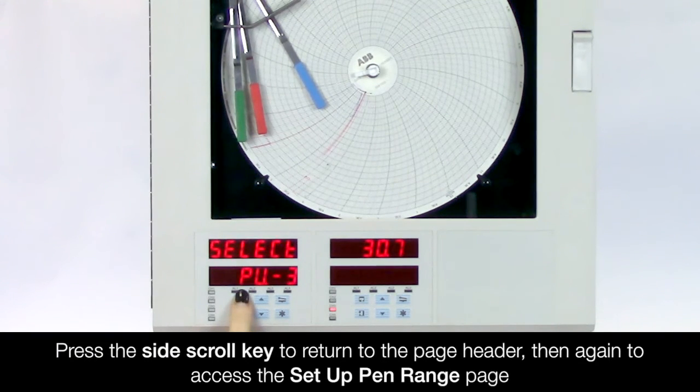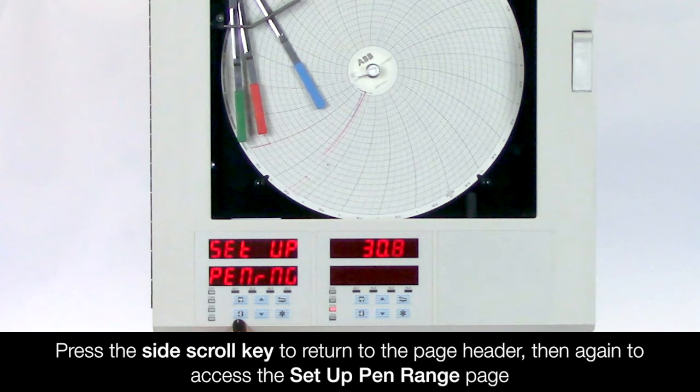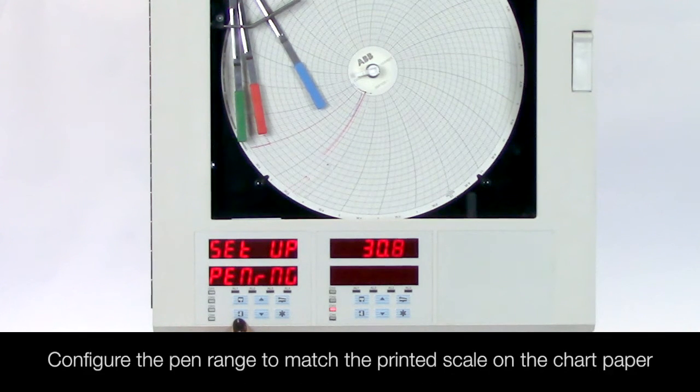When finished press the side scroll key to return to the page header and then again to access the setup pen range page. Configure the pen range you wish to record on the chart which should match the printed scale on the chart paper.